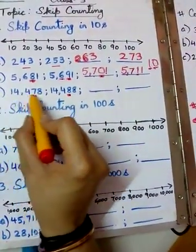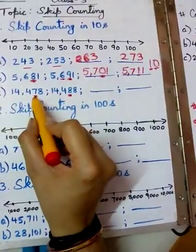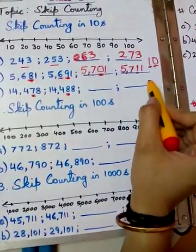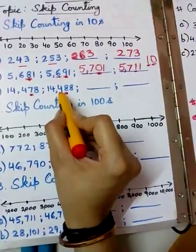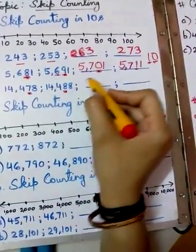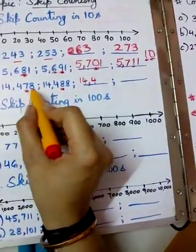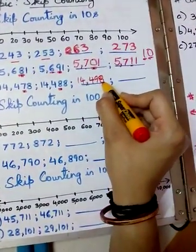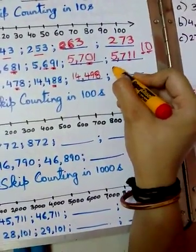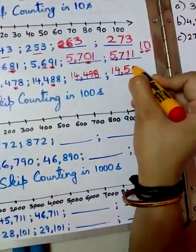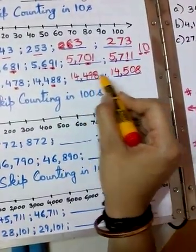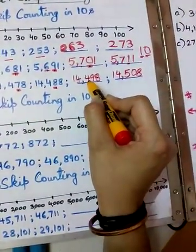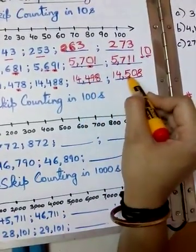Look at this example: 14,478. Mark the tens place. The rest of the digits stay the same — only the tens place changes: 7, 8, 9. So we get 14,478, 14,488, 14,498. What comes after 14,498? 14,508. Because after 9 comes 10 — we put 0 and add 1 to the hundreds place. The hundreds digit is 4, and 4 plus 1 is 5.